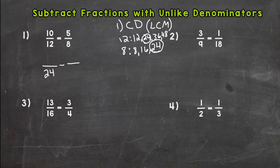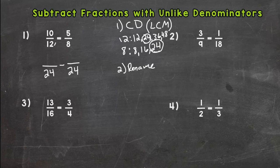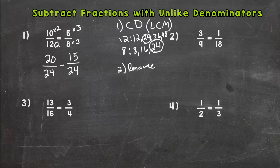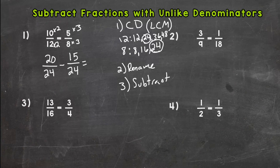Step 2, we need to rename with equivalent fractions so we're able to subtract. How do we get this 12 to equal the 24? 12 times 2 is 24, so we need to do that to the top. 10 times 2 is 20. For 5/8, 8 times 3 is 24, so 5 times 3 is 15.